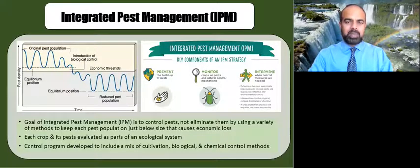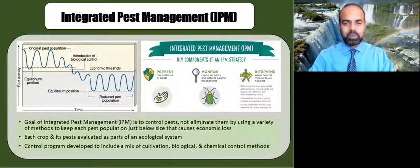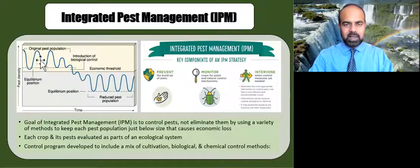The main approach applied in agriculture is integrated pest management, or IPM. The goal of IPM is to control pests — not to eliminate them — by using a variety of methods to keep each pest population just below the size that causes economic loss. Here you can see a pest population in a steady state, going up and down.